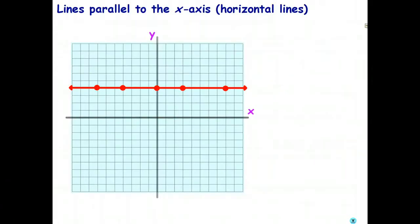Let's have a look at this particular horizontal line. What we can do is let's have a look at some points that lie on the line. So for example, that point there has an x-coordinate of negative 7 and a y-coordinate of 4.